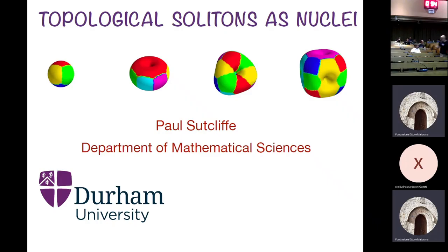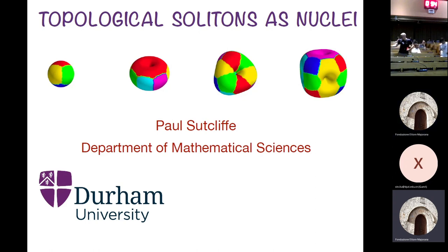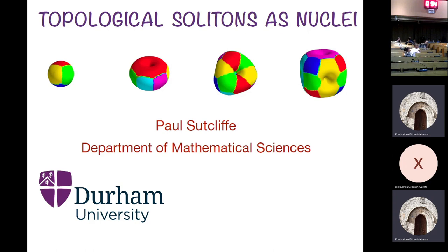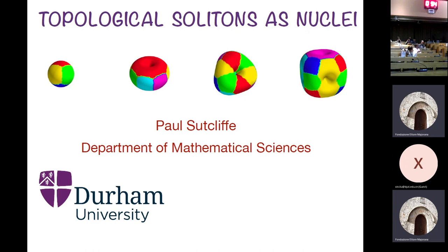I'm going to tell you about a topological approach to nuclei. It's not quite Kelvin's knotted vortex tubes in ether as atoms, but actually it's in a similar spirit. It will be winding solitons in a pion field to describe nuclei. And if I get to the end of the talk, you'll have found out what I'm doing this week.